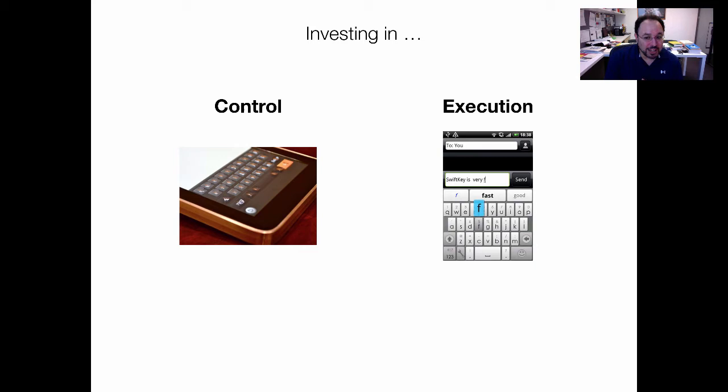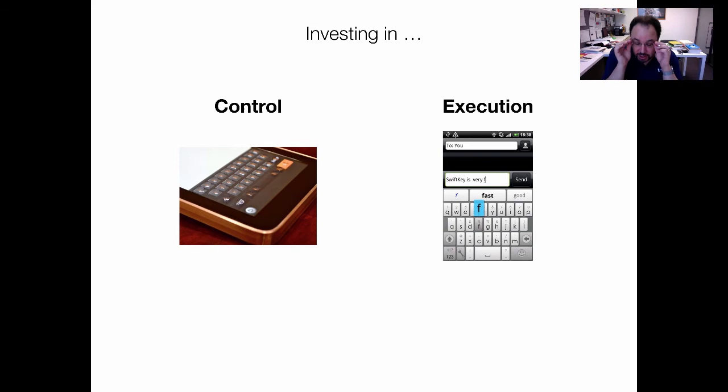In control, you erect barriers to entry to protect yourself from future competition. In execution, you just try to stay ahead of the pack. Control — erecting those barriers — takes a long time. Execution allows you to get to market quickly, which can be really important for resource-constrained firms. So there is a trade-off.